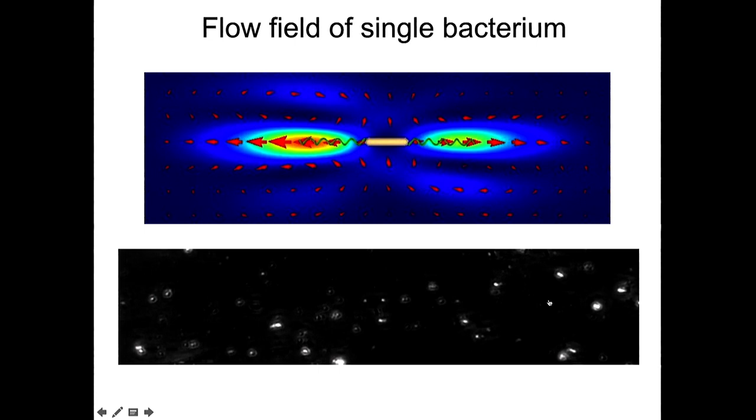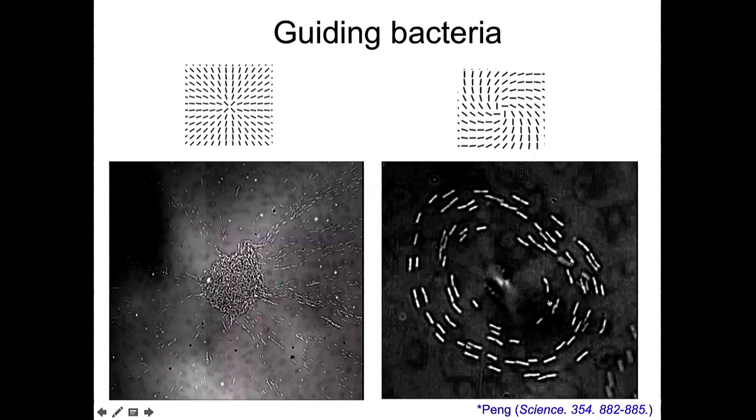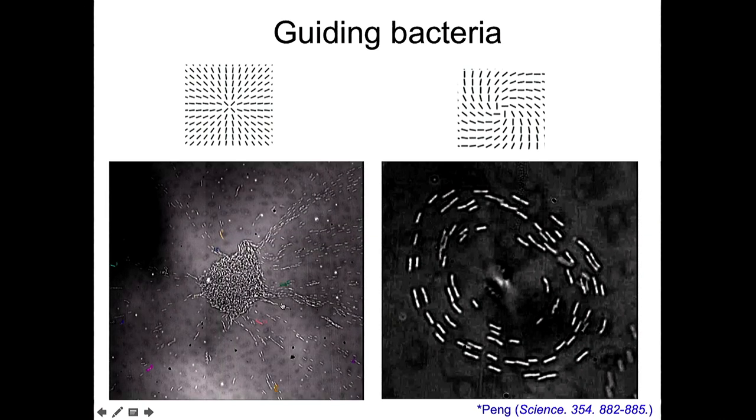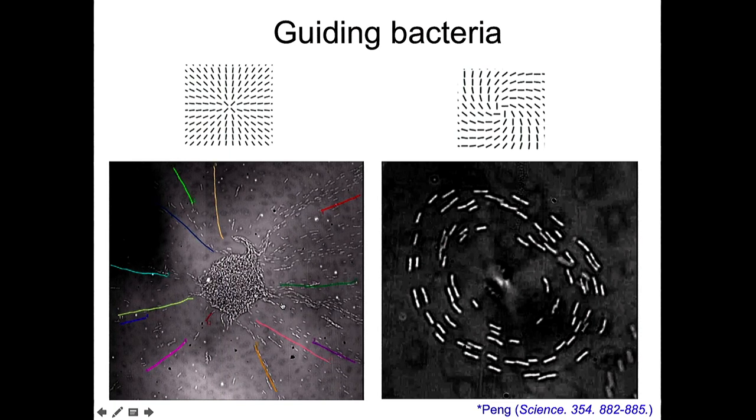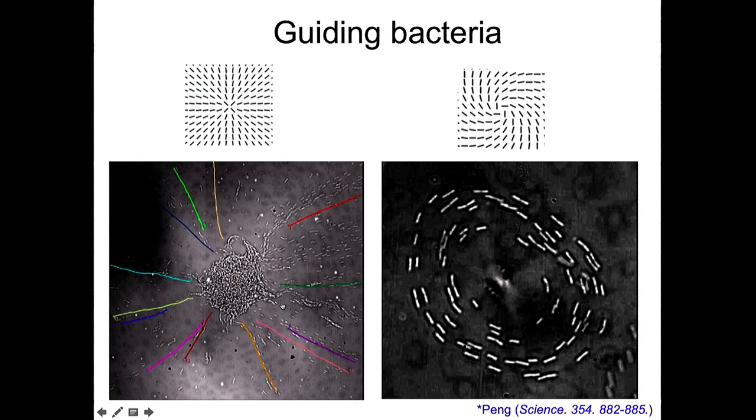And before talking about the collective behavior, I just want to quickly show you a few quite interesting tricks how we can guide bacteria. For example, we can create such a configuration of liquid orientation of liquid crystal like star configuration, and then all bacteria since they're swimming parallel to the director field, they will swim towards the center and away from the center. So they will concentrate in the center of this star.